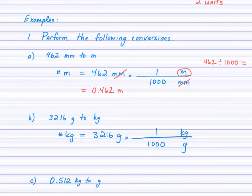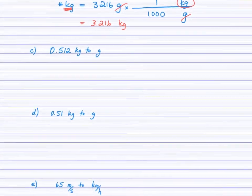So when you check out the units, grams are going to cancel here, which leaves us with kilograms, which is exactly what we wanted. And on our calculator, 3,216 times 1, which again you don't need to do, it won't change the value, divided by 1,000. So we end up with 3.216 kilograms. Okay, moving on.